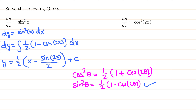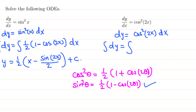For the second ODE with cosine squared 2x, let θ equal 2x. Moving dx over: dy equals cosine squared 2x dx. Applying the power-reducing formula with the double angle: dy equals one half (1 plus cosine(2 times 2x)) dx, which is one half (1 plus cosine 4x) dx. Now integrate both sides.